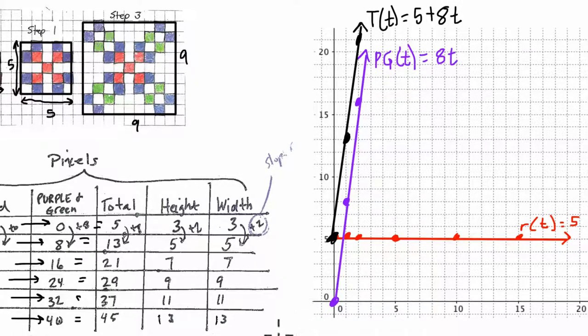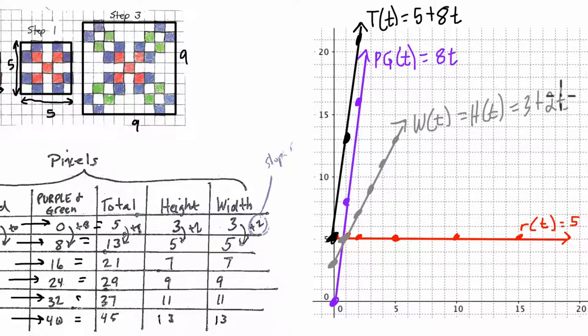Now the height and width are also going to be the same line. I'll use gray. In this case, we start at 3, but our slope is 2. So 1, 2, 3, here's 3. And then we go up 2 over 1, up 2 over 1, up 2 over 1, and so on and so forth. So this line right here represents both the height and the width, because they grow at the same rate. So I'm going to write the width based on time, the width of time, and the height based on time. They're both equal. They both equal 3, our starting value, plus 2 pixels per second. And these are our graphs.